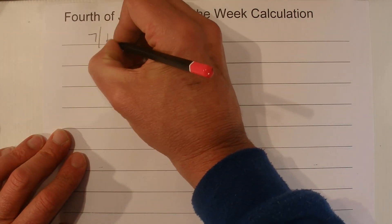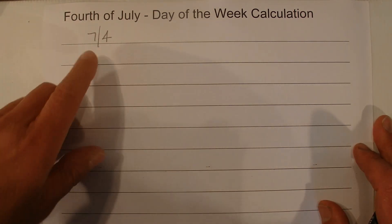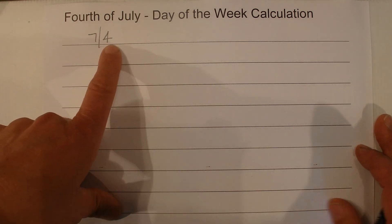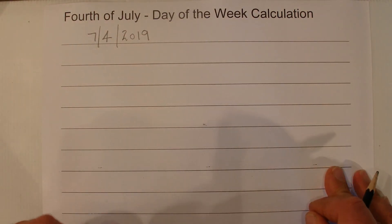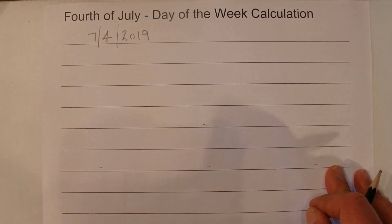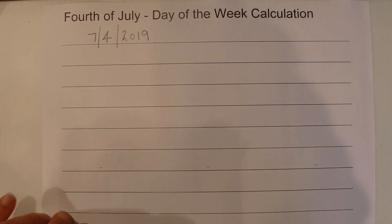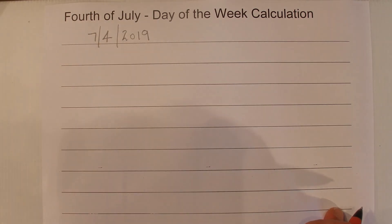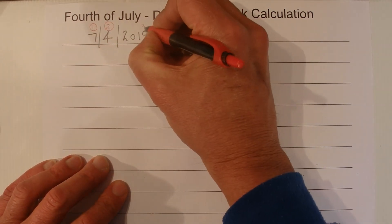I'm going to show you a simple calculation to work out what day of the week July the 4th falls on, and I'll do the date in the American date format with the month first and then the day. For the first calculation I'm going to use the year 2019 to show you how it works. This formula can be used for any year. The great thing about it is all the numbers are based on the digits within the date itself.